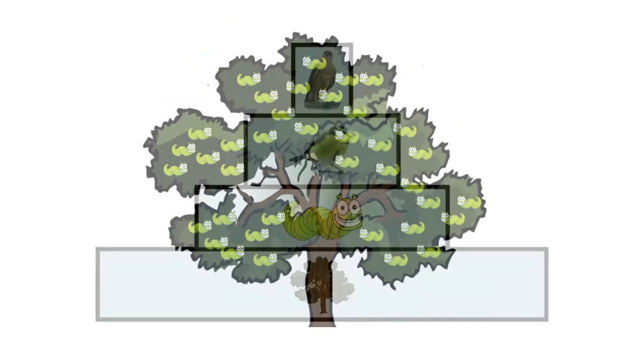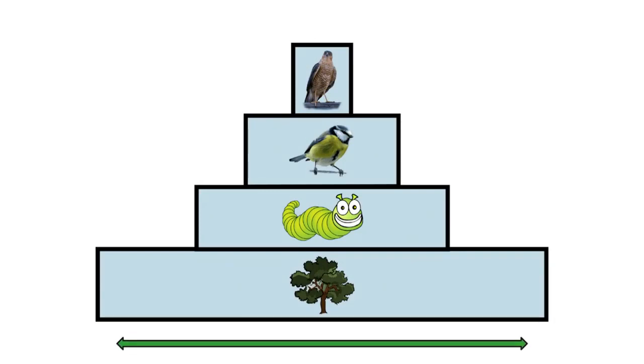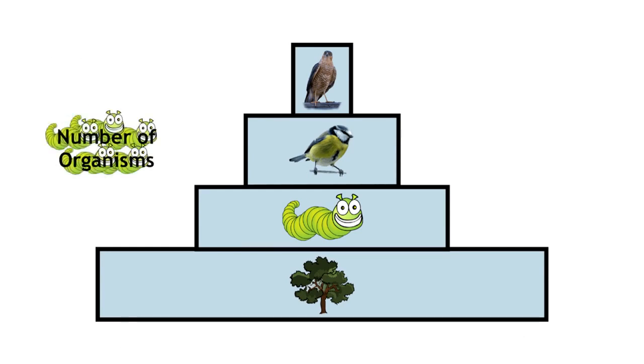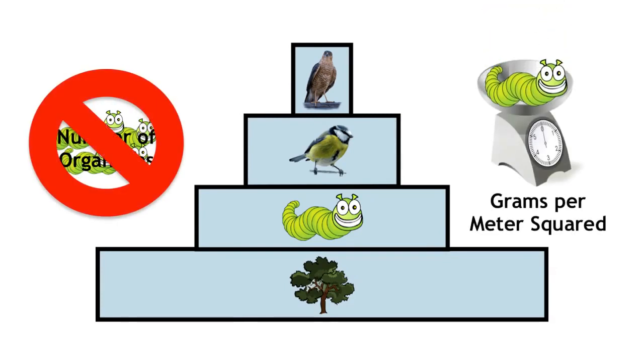Pyramids of biomass, on the other hand, are almost always largest at the bottom and then get smaller going up. This is because, rather than showing the number of organisms, they show the total mass in that trophic level.